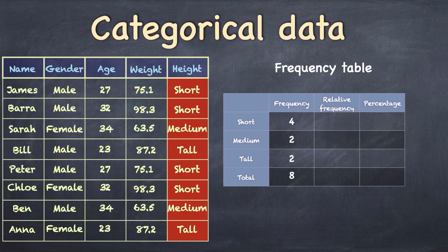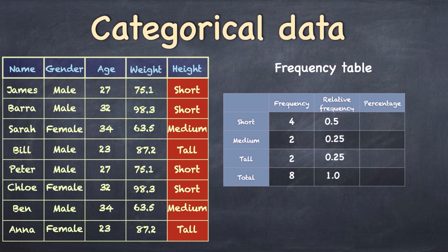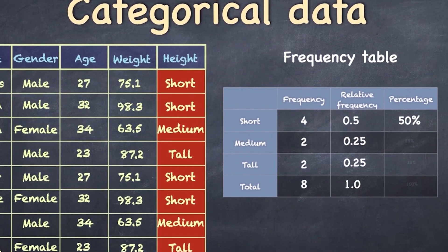Now, if you want to know what proportion of the total are short, we call that the relative frequency. Then of course what you do is you divide the number of short people by the total, and you've got 0.5, which is a half. And if you want to know what the percentage is, well, you simply multiply by 100.